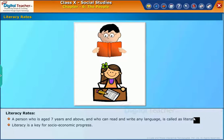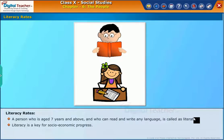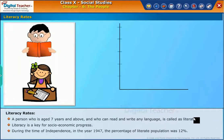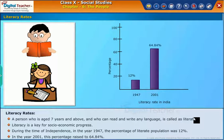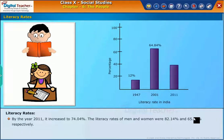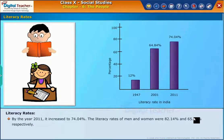Literacy is a key for socio-economic progress. During the time of independence in the year 1947, the percentage of literate population was 12%. In the year 2001, this percentage raised to 64.84%. By the year 2011, it increased to 74.04%. The literacy rates of men and women were 82.14% and 65.46% respectively.